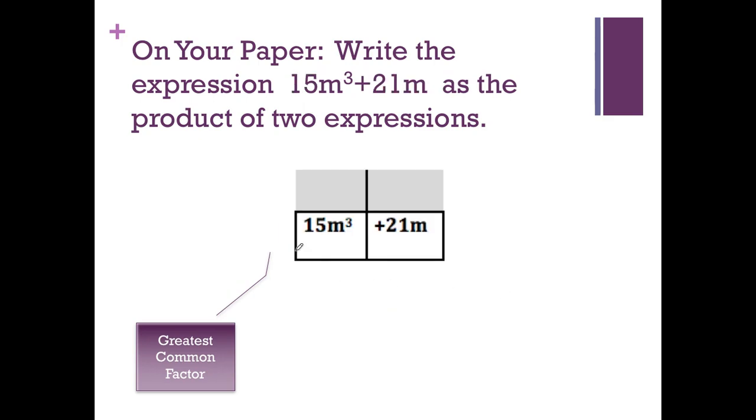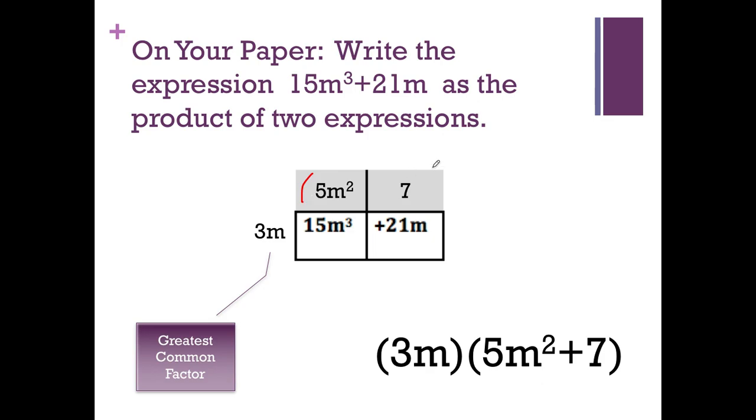All right, let's do the same thing. So if you remember from earlier, the greatest common factor that we had was 3m. So then you can use that to find what multiplied here. So let's see, 3 times what is 15? 3 times 5 is 15. m times what is m cubed? m squared. All right, now we go up here and we have 21m. So, well, 3 times 7 is 21, and there's already an m, so I don't need to write that. So 3m is our greatest common factor, and then here are the two factors we wrote.